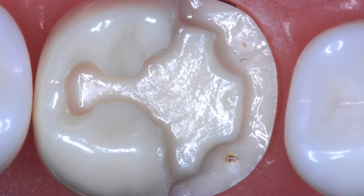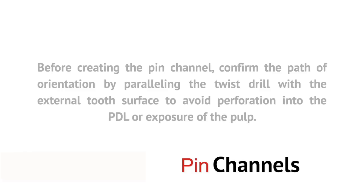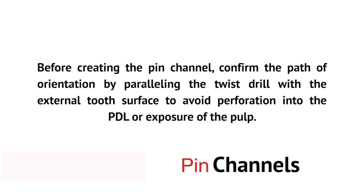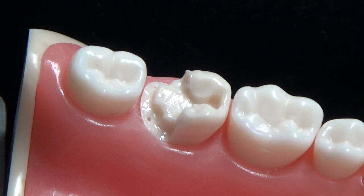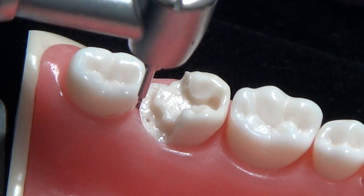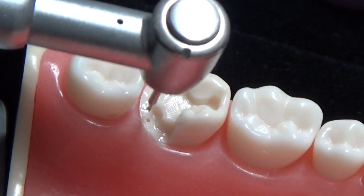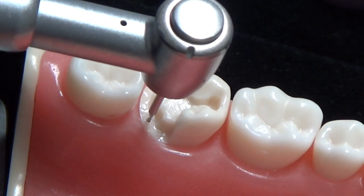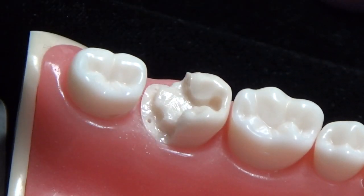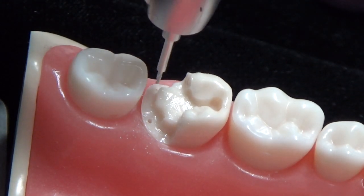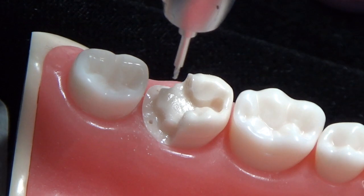The next step is to create our pin channels. I'm ready to make the pin channels, so I'm going to follow the path of draw so I don't damage the PDL or the pulp chamber. I'll go ahead and do the distal lingual — that's it, one time.